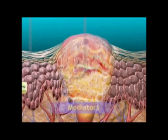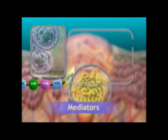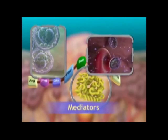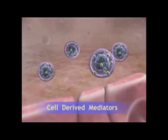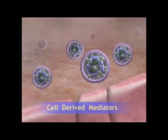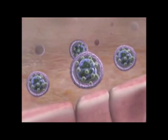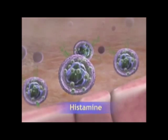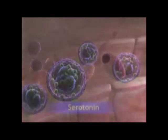Concurrent with the events of the vascular and cellular stages, chemical mediators release bioactive agents that act to mediate the inflammatory response. Mediators are derived from the cells or from plasma. One of the first mediators of an inflammatory response is a cell-derived mediator, histamine, found in high concentrations in the mast cells of connective tissues adjacent to blood vessels, as well as in blood basophils and platelets.